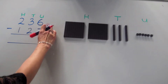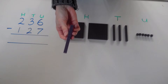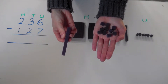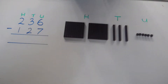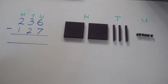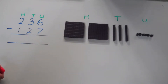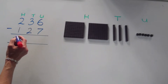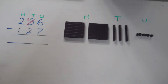Let's remember that 1 ten can be exchanged for 10 units. That's going to help us with this calculation. I am going to exchange one 10 from the tens column into 10 units that will go into the units column.